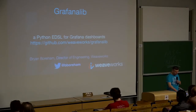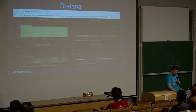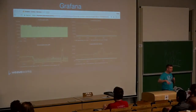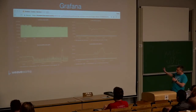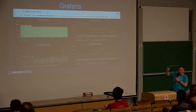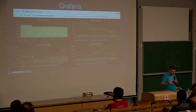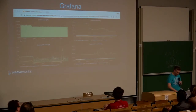My lightning talk is about this thing called Grafana Lib. Grafana — there's been lots of talks, most of you have probably seen it. We love Grafana. It's very beautiful, you can put together dashboards. The thing we don't love about it is it's all done by clicking on stuff, and we don't like clicking on stuff. We want to check stuff into Git — that's what we want to do.